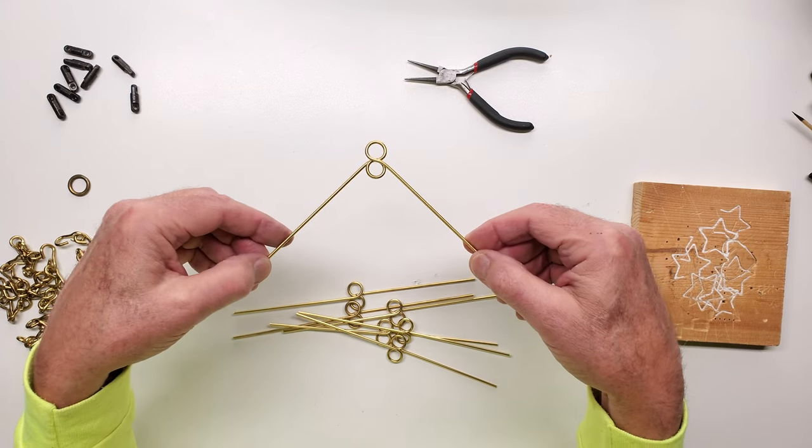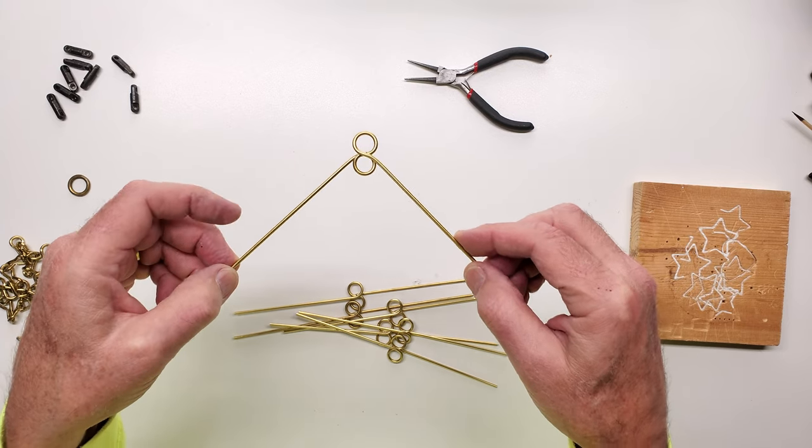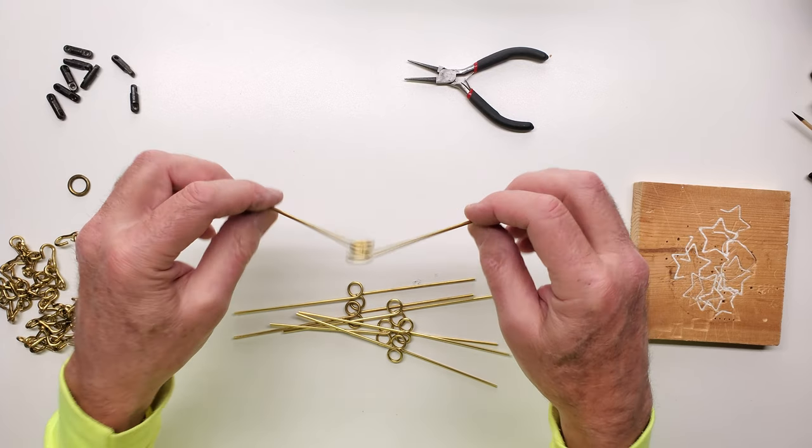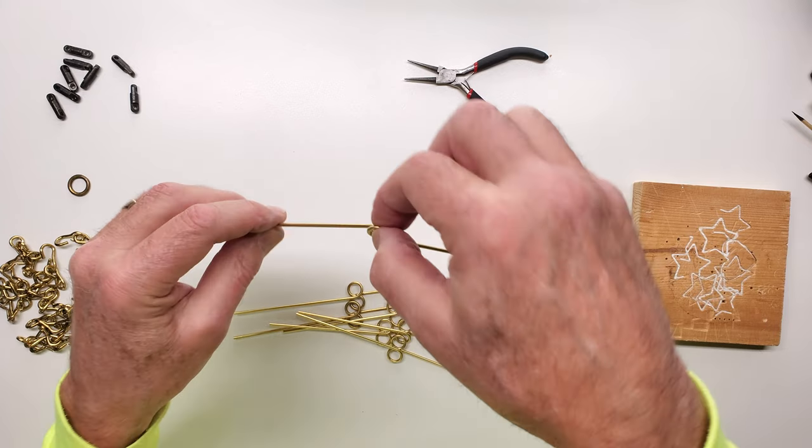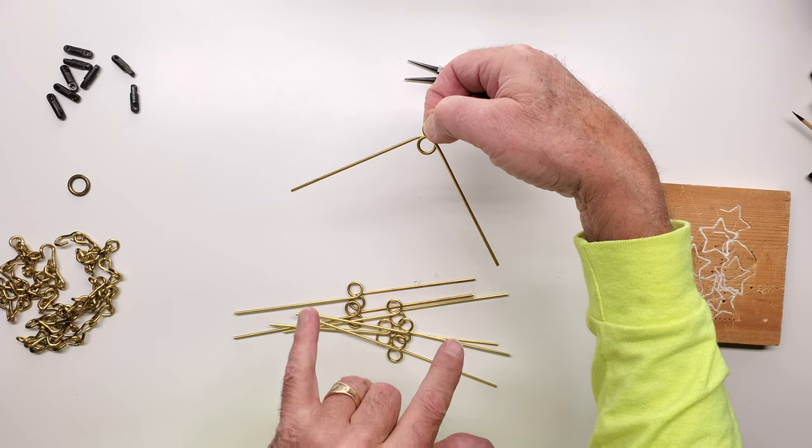As you can see, I've been careful to maintain the double loop in the middle, so that when it goes to hang, it will hang with the double loop straight up and down and the arms to the side.